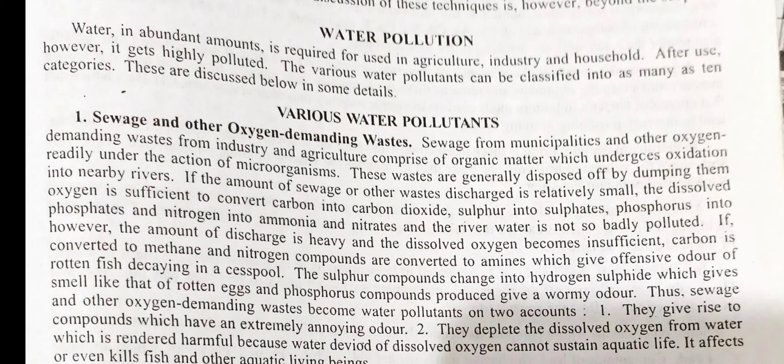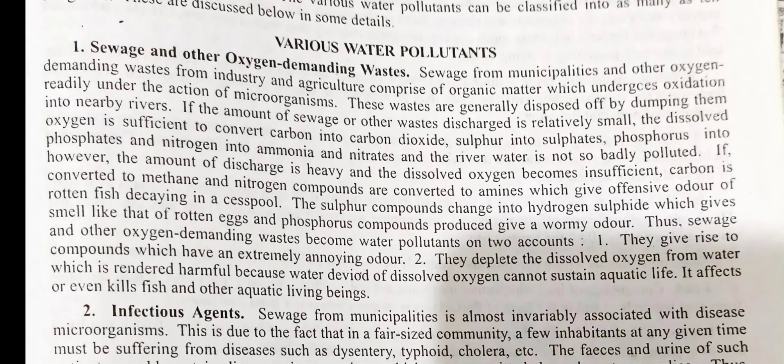If, however, the amount of discharge is heavy and the dissolved oxygen becomes insufficient, carbon is converted to methane and nitrogen compounds are converted to amines which give the offensive odor of rotten fish decaying in a sea pool. The sulfur compounds change into hydrogen sulfide which smells like rotten eggs, and phosphoric compounds produce a wormy odor. Thus sewage and other oxygen-demanding wastes become water pollutants on two accounts: first, they give rise to compounds with an extremely annoying odor; second, they deplete dissolved oxygen from water, which is rendered harmful because water devoid of dissolved oxygen cannot sustain aquatic life — it affects or even kills fish and other aquatic life.